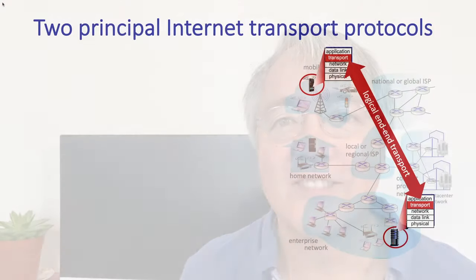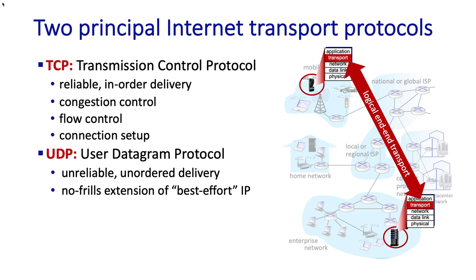TCP — the Transmission Control Protocol — provides reliable, in-order delivery between application-level processes, subject to congestion control and flow control. To implement reliability, congestion control, and flow control, we need to set up a connection with connection state at both the sender and receiver. The other internet transport protocol is UDP — the User Datagram Protocol — which is a best-effort, no-frills approach. It has unreliable delivery, messages may be delivered out of order, and not too much is done there.